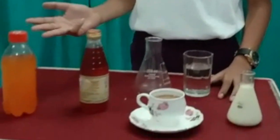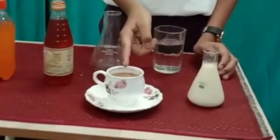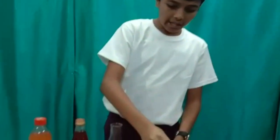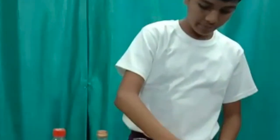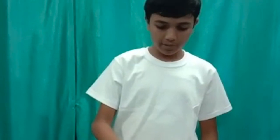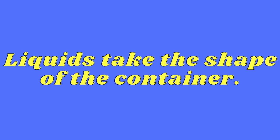Here I have many things: water, oil, juice, tea, and milk. These things are all kept in containers. Water is kept in a glass, milk is kept in a conical flask, oil and juice are kept in bottles, and tea is kept in a cup. This shows that liquids do not have a definite shape — they take the shape of the container in which they are kept.